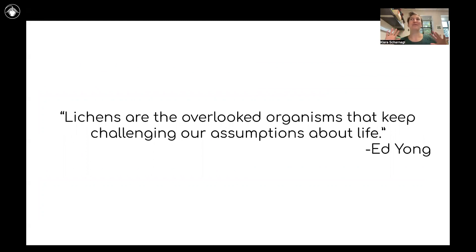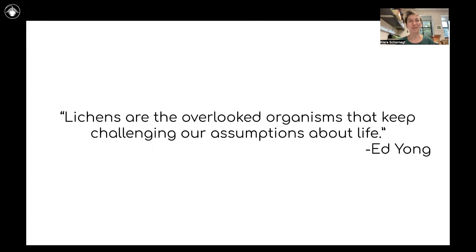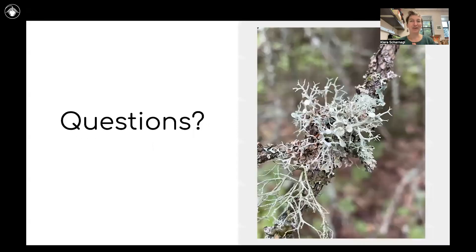To bring in another quote that really sums up this first module — let's try to define a lichen. Well, it's actually really complicated, but here's a term that works, with a lot to think about: lichens are the overlooked organisms that keep challenging our assumptions about life. What is a lichen? Is it an individual? Is it a single species? No, it is many things — it is a holobiont. In our next module, we'll get into what is a lichen species, because after all that, how on earth do we give names to these things? You will find out. I will happily take any questions.